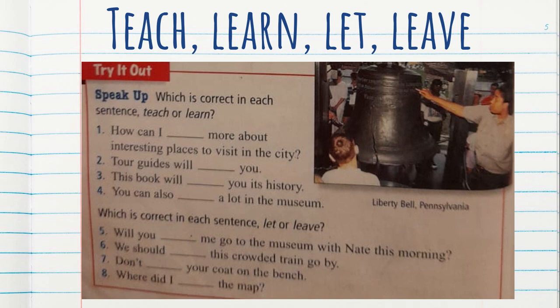Let's go to the second set of sentences. Which is correct in each sentence? Now you will use let or leave. Remember, leave has two meanings. For example: Will you let me go to the museum with Nate this morning? And: We should leave this train go by — to go away. You will complete numbers seven and eight. I already gave you half of the activity. Copy that in your notebook.